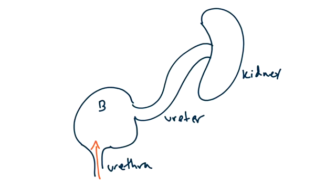Normally, the ureters enter the bladder at an angle, which mitigates the movement of fluid from the bladder up the ureters and into the kidneys. They also contain valves, which help further reduce the risk. However, if the anatomy is at all abnormal, then there is an increased risk of cystitis becoming complicated pyelonephritis, or infection of the kidneys, due to movement of bacteria from the bladder to the kidneys.